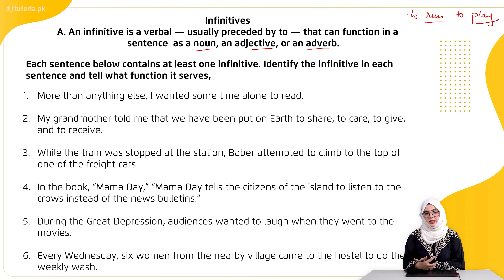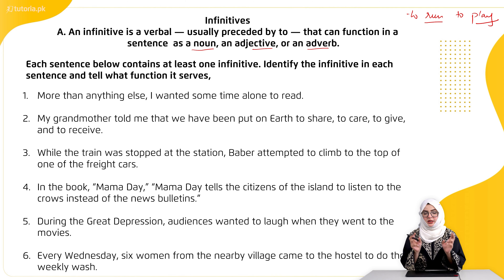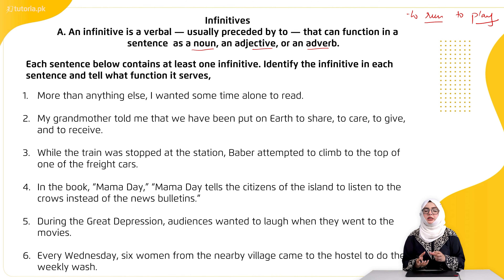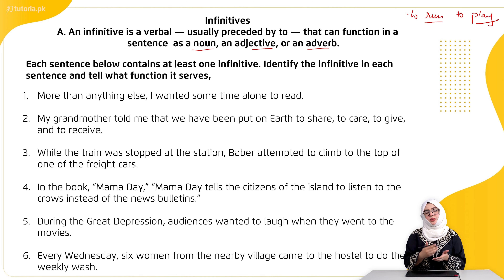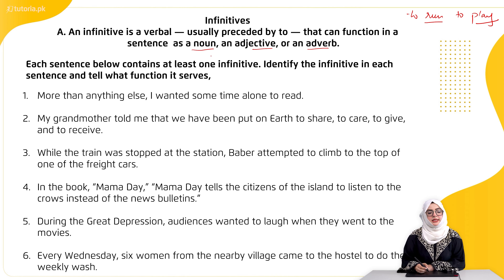Infinitives noun, adjective, aur adverb ki tarah kaise act karte hain? Nouns wo hote hain jo 'what' question ka jawab dete hain — they can be a subject or an object. Adverbs jo hote hain, agar koi action ho raha hota hai, us ke baare mein details ya qualities bata rahe hote hain. Adjectives kisi bhi sentence mein jo noun hota hai, usse qualify ya identify kar ke uski qualities bata rahe hote hain.